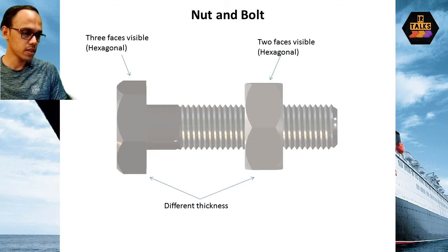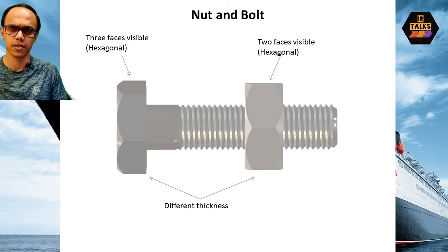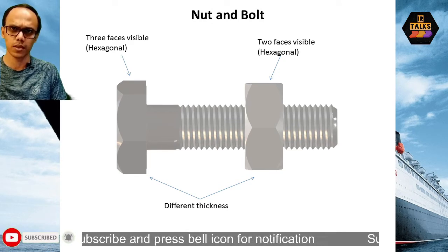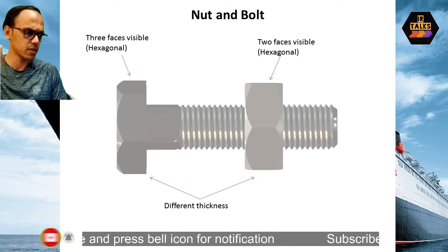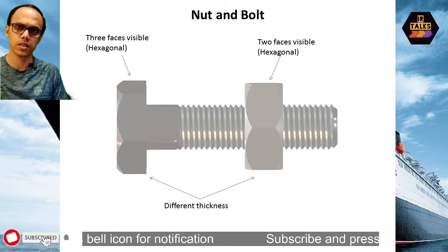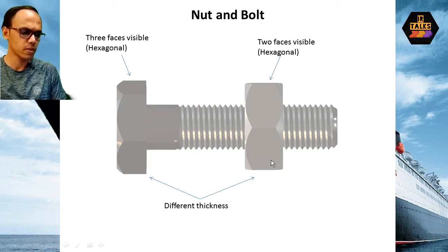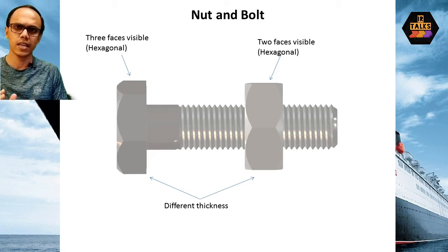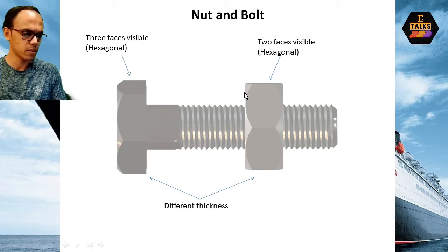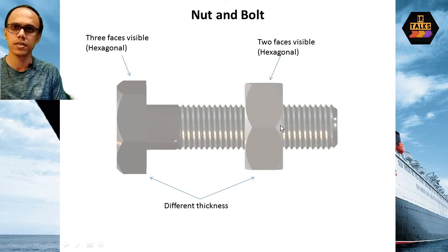There is a thickness difference between the hexagonal nut and bolt. The nut has a little less thickness — height is the thickness here. So the thickness is a little bit less in the nut. If you look at the hexagonal nut end, we have the hexagonal shape at this end, and there is a thickness here.